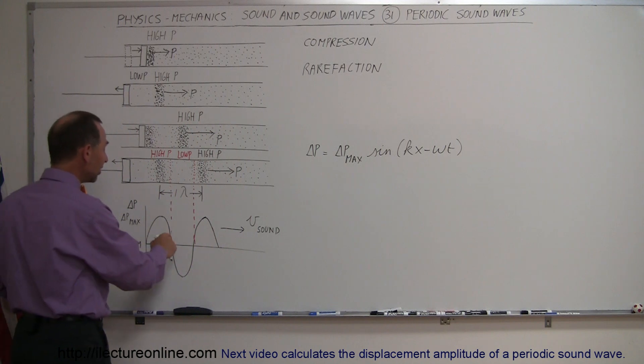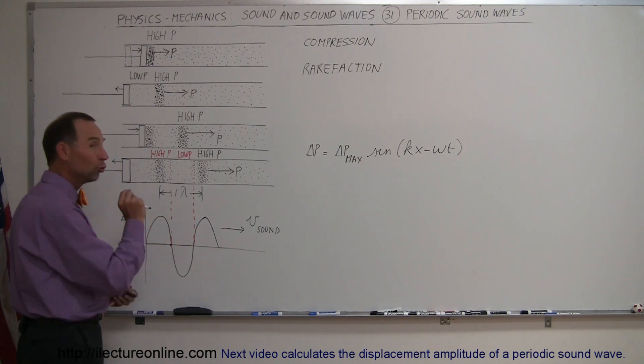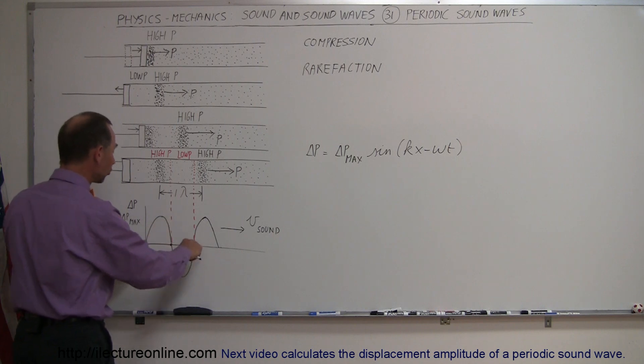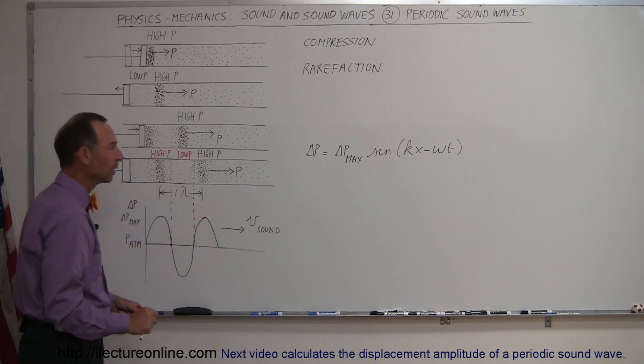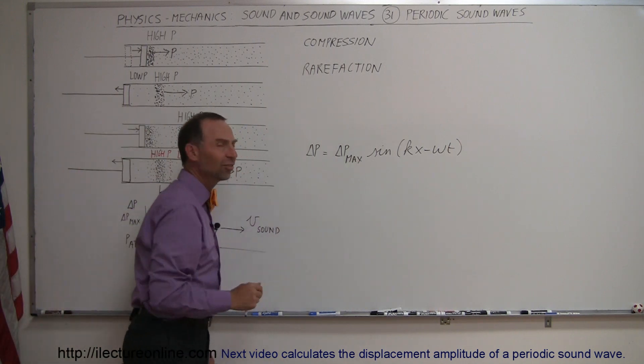Notice that this is indeed a sine wave. At t equals zero, at this location, the pressure is normal, atmospheric pressure, so no deviation from normal. Then high pressure, normal, low pressure, normal, high pressure. So delta p max is simply the largest deviation in the pressure from normal to the maximum compression points.